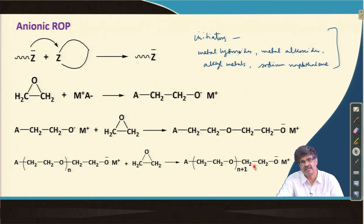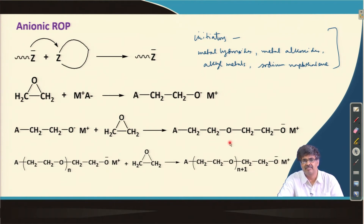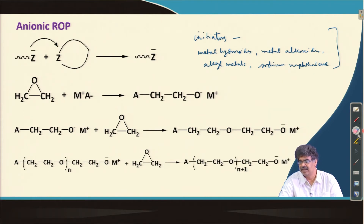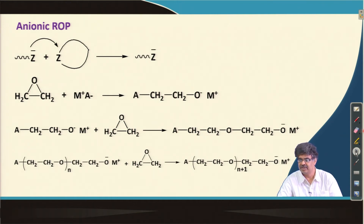Because of the living nature, the size of ring opening polymers is determined by the monomer-to-initiator ratio — a higher monomer-to-initiator ratio gives higher molecular weight. Not many commercial polymers are produced by ring opening polymerization, so we will keep this discussion brief and move to chain copolymerization.